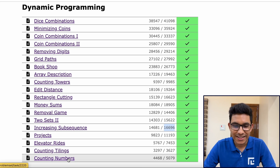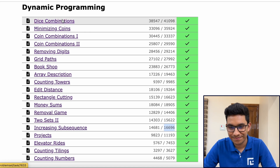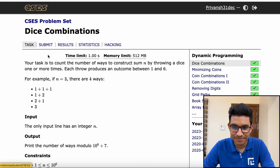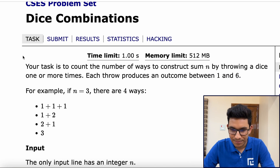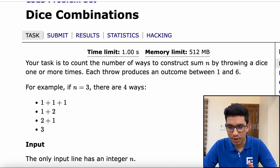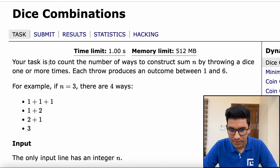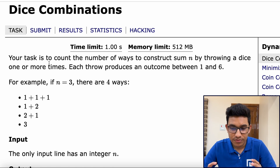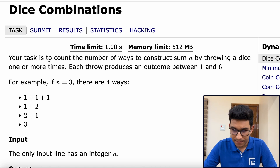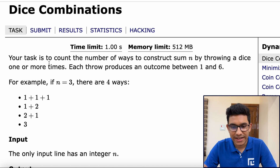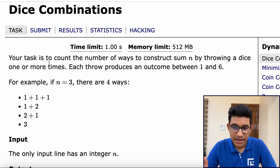So with that said, let's get started with this very first problem. Let's read the problem statement clearly. Your task is to count the number of ways to construct some integer n by throwing a dice one or more times. Each throw produces an outcome between one and six.